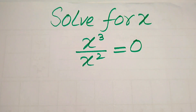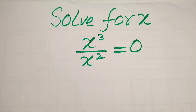Hello everyone. How to solve this problem for the values of x if we have x cubed divided by x squared equals to 0. We solve this problem for the values of x. First we need to find all the roots of this equation, and at the end we will check which of the roots satisfy the given equation and which one are extraneous roots.